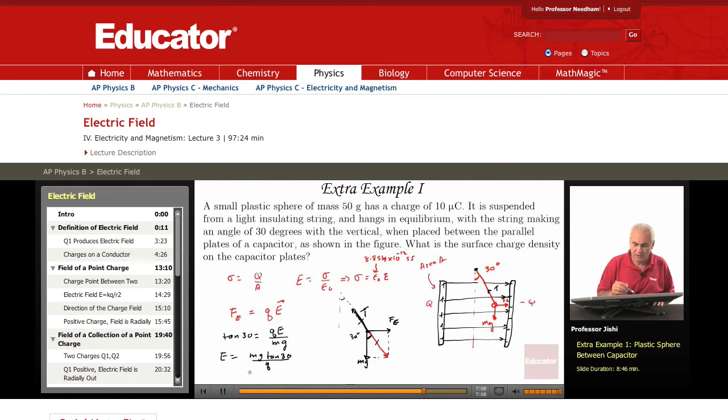And sigma is just epsilon 0 times E. It's epsilon 0 times MG tangent 30 over Q.